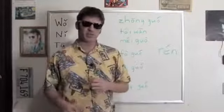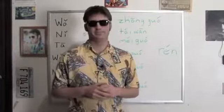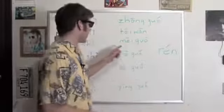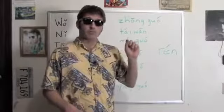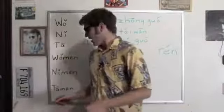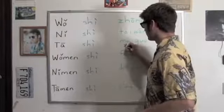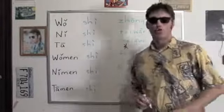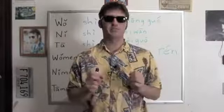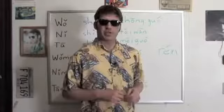The second one you'll probably recognize: 台湾, the island just off the coast of China. Then 美国, which means America. 美 means 'beautiful' — you might have seen this character as a tattoo on someone's body; it's popular. So 美国 — beautiful country — America.